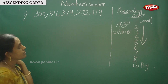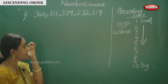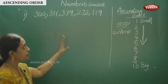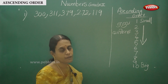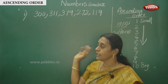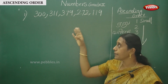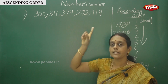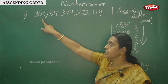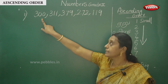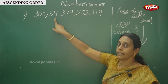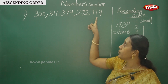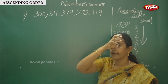So, five sets of numbers here. First, what do you do? Read all five numbers. All are three-digit numbers. The first question: analyze. Three-digit numbers are: first one is 300, 311, 379, 272, and 119.